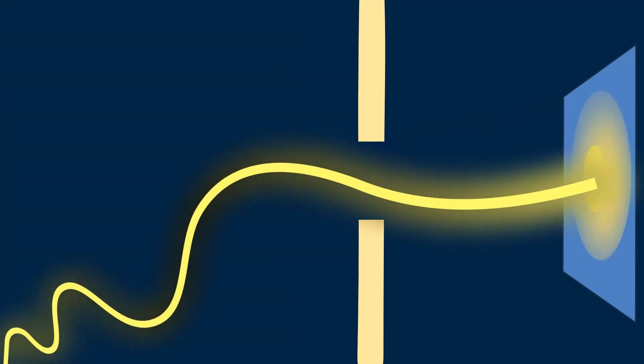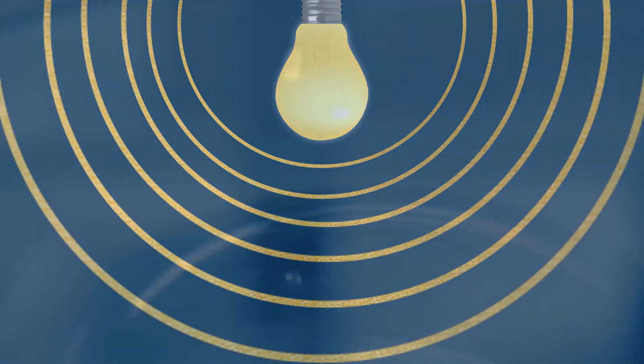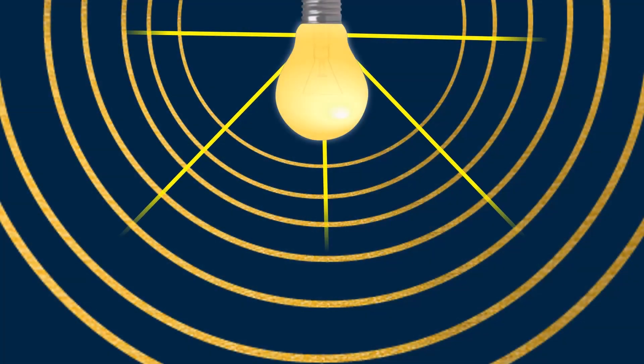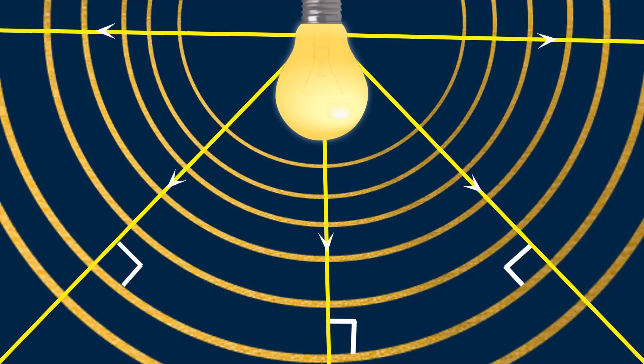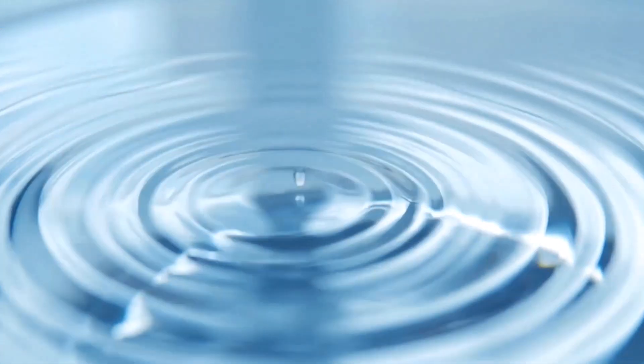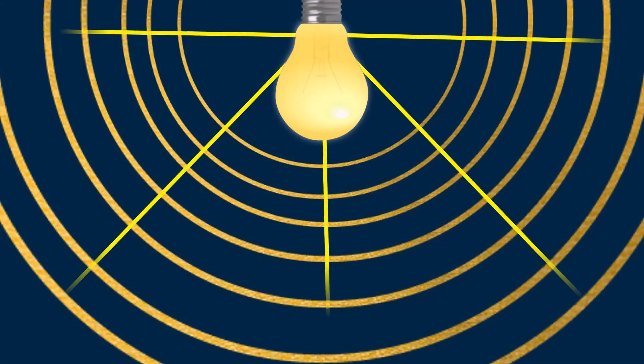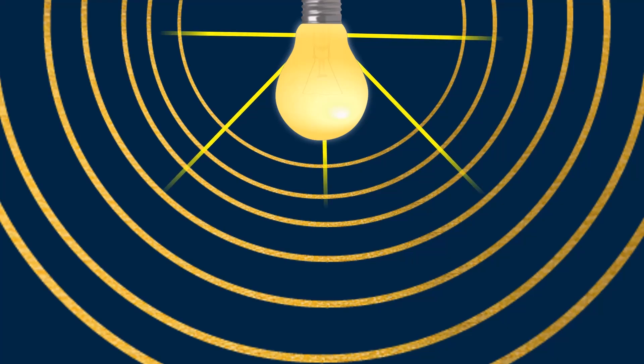This can be explained if we consider light as a wave. Consider this light source giving us light. Light coming from this source ripples in all directions, like the waves on the surface of water. The direction of light at every point is perpendicular. Water ripples form on a surface in two dimensions, so they look like a circle. But light waves spread in space — in three dimensions — so the ripples are in the form of concentric spheres.